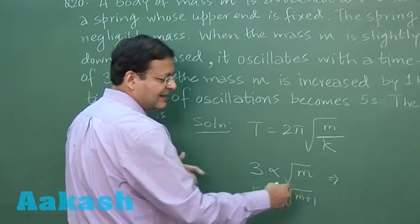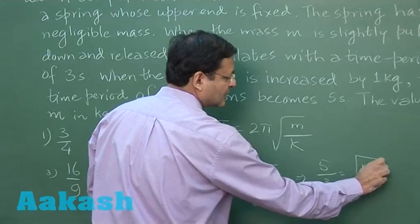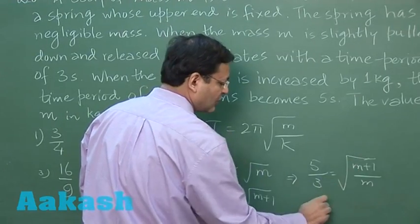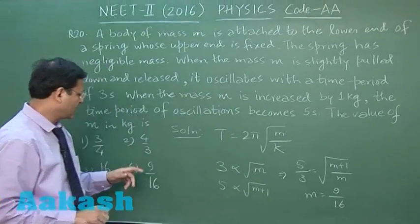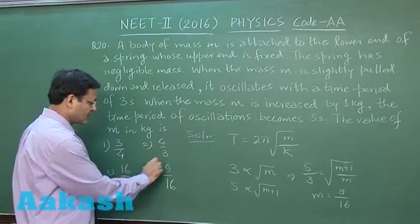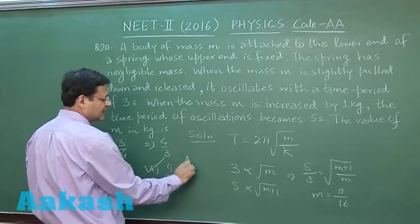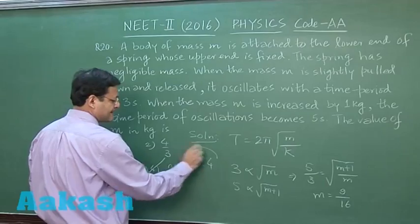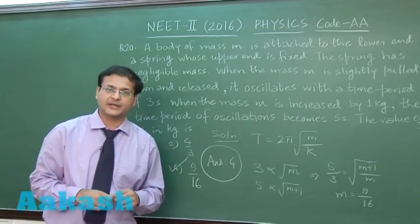If you divide these two equations, 5/3 equals √((M+1)/M). You have to solve it for M. That will be simply 9/16 kg. So 9/16 kg will be the correct option. I will be marking answer 4 for this question. Fourth option is the correct option for question 20.